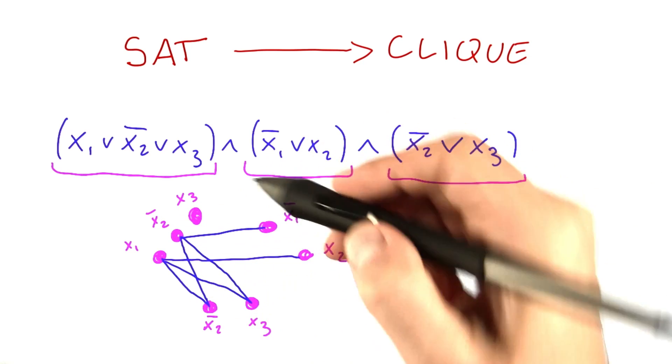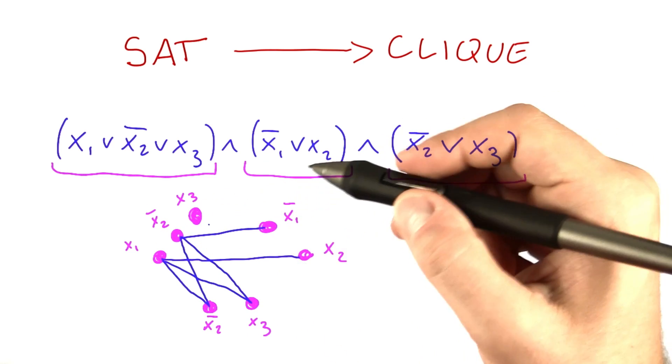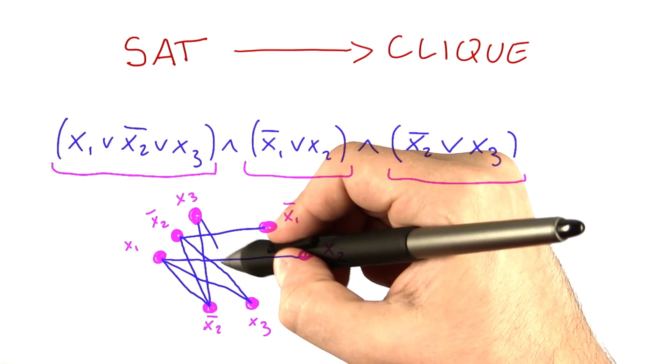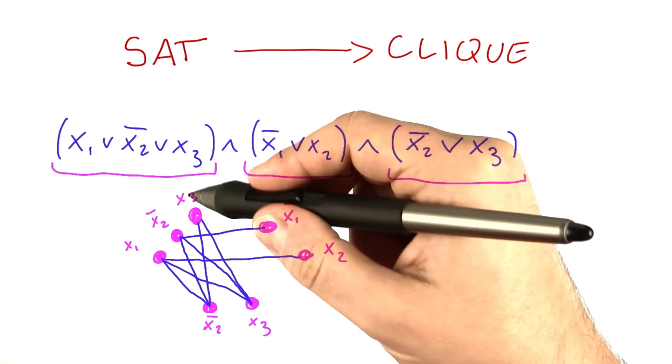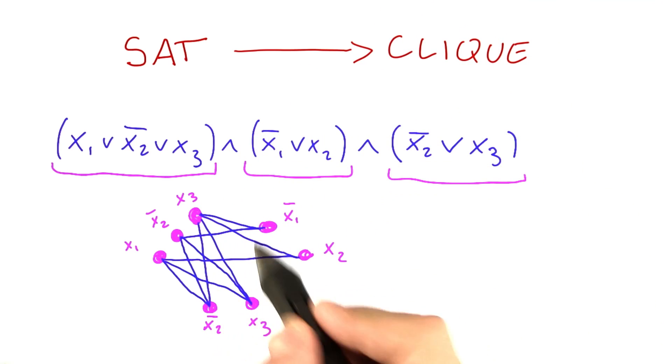So we'll draw an edge here. It's only if we have a not and here we don't have one. So for x3, we can draw an edge down here, down here. Again, those are the same, so we do draw an edge. That's fine. And we'll draw one here.